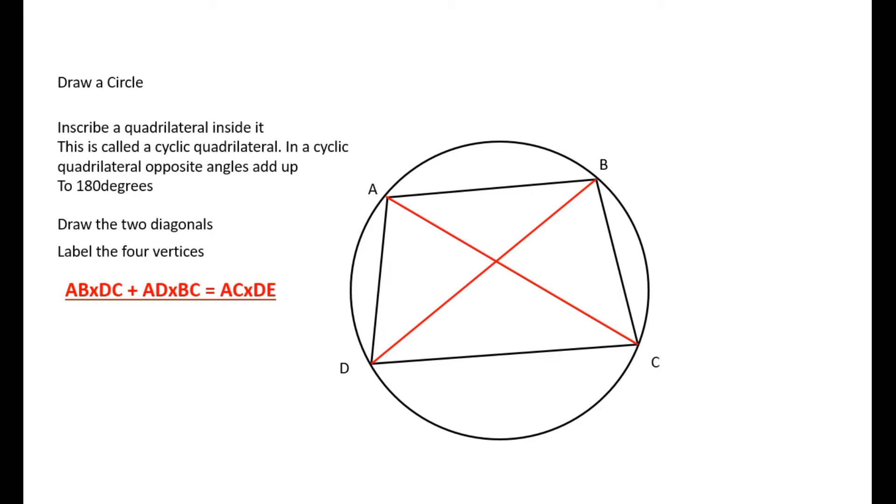To prove this like most theorems in plane geometry we need to add some extra construction lines. In this case one line. We draw the line AE in such a way that the angle DAE is equal to the angle BAC. So these two angles are equal by the choice of the line that we've made.